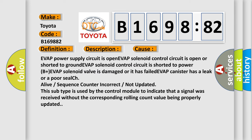And now this is a short description of this DTC code. This diagnostic error occurs most often in these cases: EVAP power supply circuit is open, EVAP solenoid control circuit is open or shorted to ground, EVAP solenoid control circuit is shorted to power B plus, EVAP solenoid valve is damaged or it has failed.